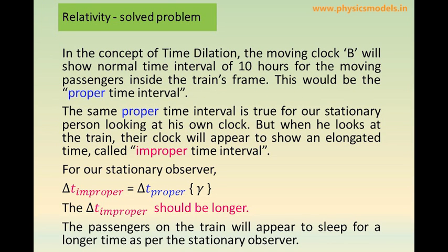For the passengers inside that train, their watches and their clocks are all together moving at the same speed. They are in an inertial frame, so they will see a sleeping time of 10 hours, which for them is the proper time interval. For the stationary person, if he looks at only his clock, he will also see 10 hours, which for him is proper.